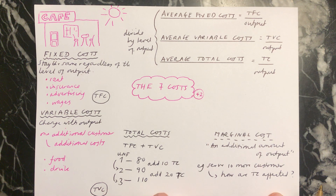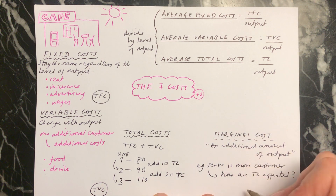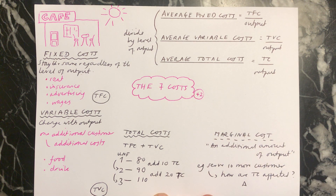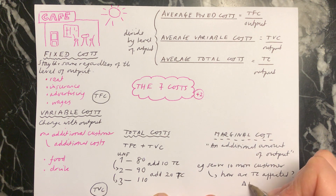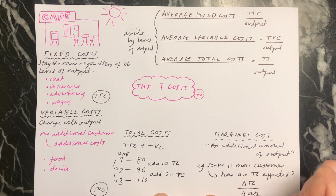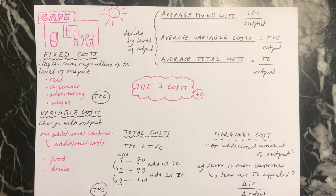The formula to work out your marginal cost is the change in your total cost divided by the change in output. I'll see you next time.